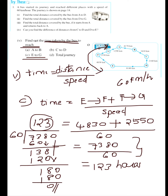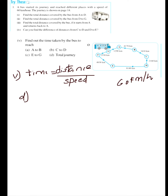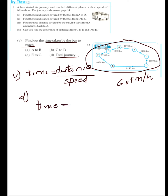Now let's see part D: find the time taken by the bus for the total journey. Time equals distance divided by speed. The total distance was found in the third question — starting from A and returning to A — which was 26,550 km. So 26,550 divided by 60 will give the time.